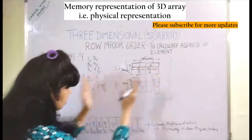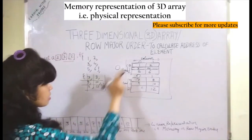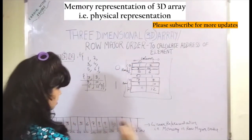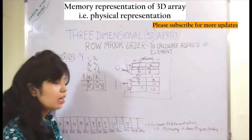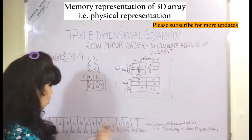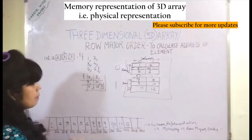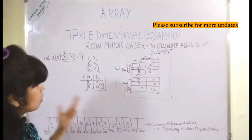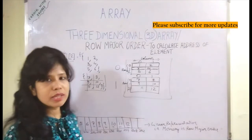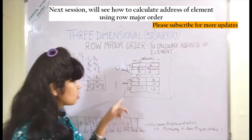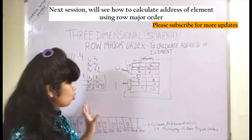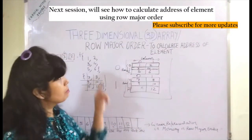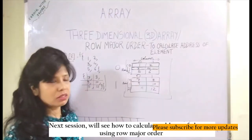This is how a 3D array is represented in memory — not in its 3D form, but in a linear, one-dimensional form. Now let us see how to calculate the address of an element and derive the formula for the same using row major order.